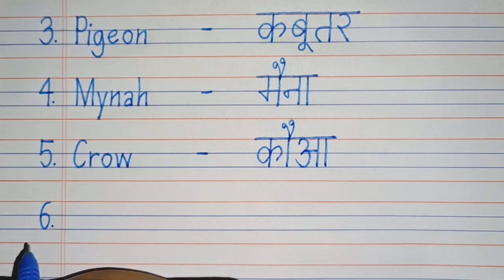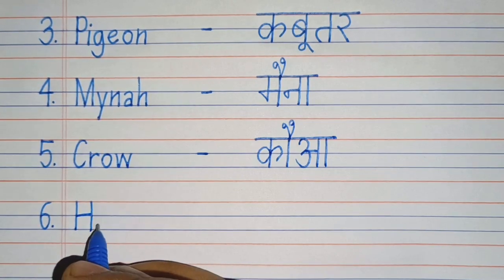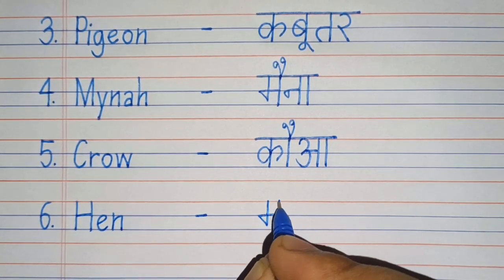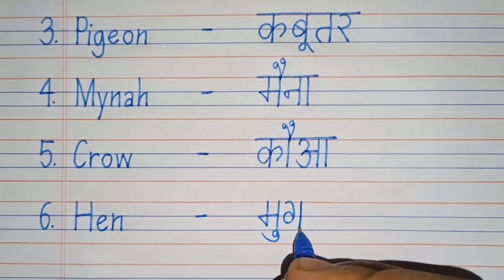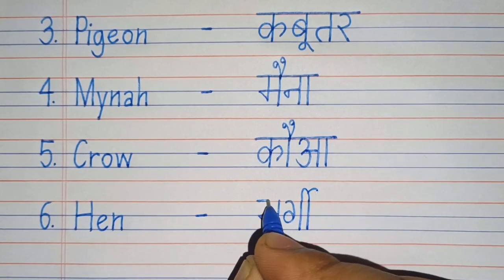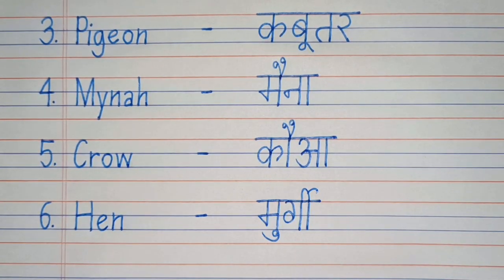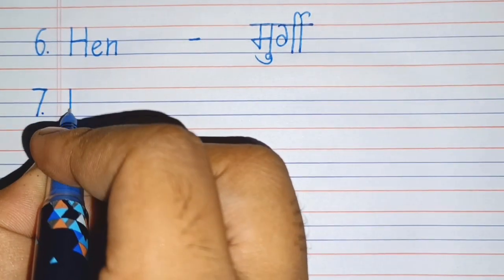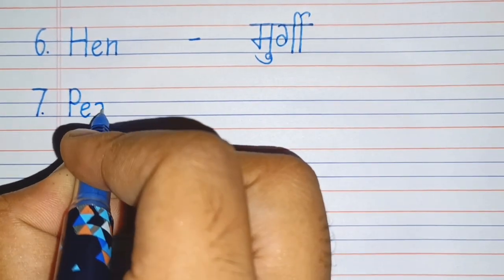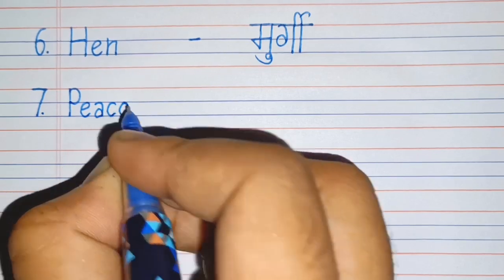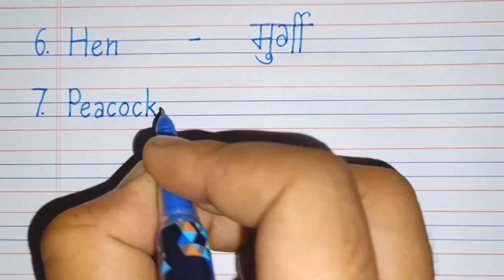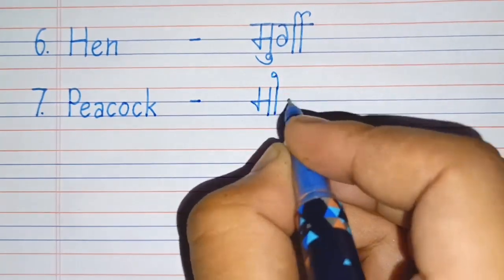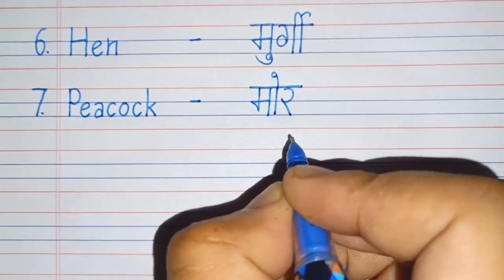Sixth number: H-E-N, Hen. Seventh number: P-E-A-C-O-C-K, Peacock. Peacock means More.